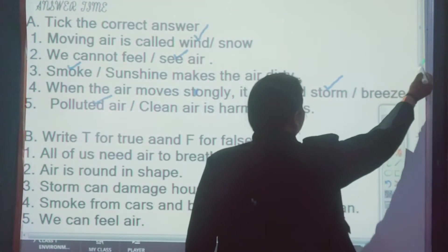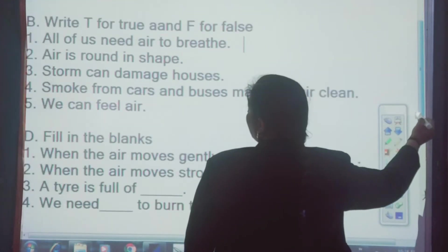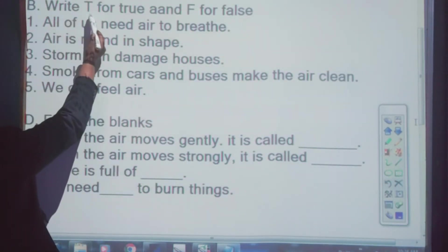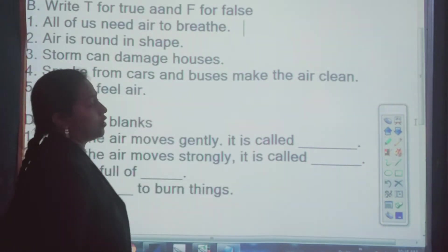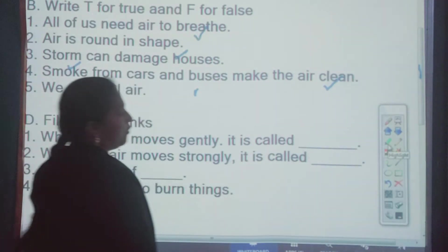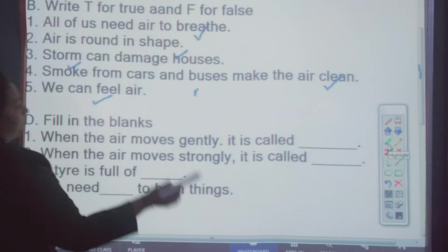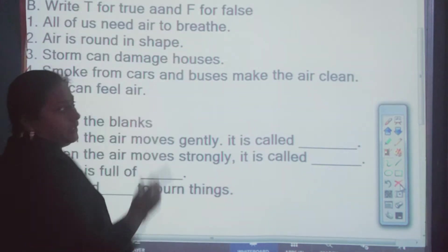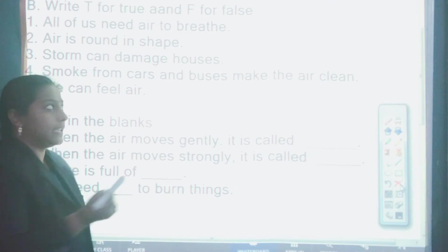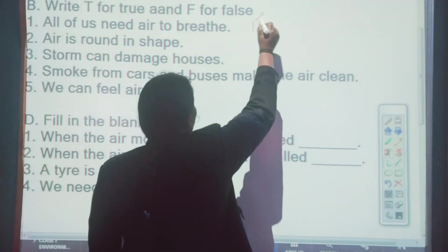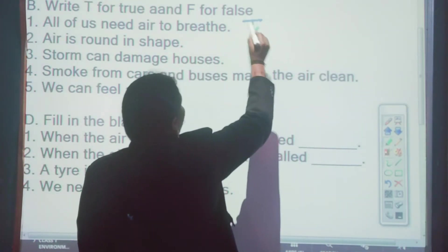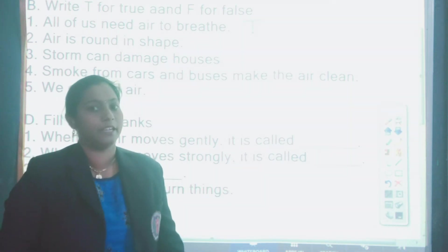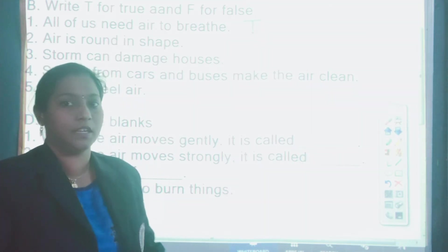Let's quickly move to the next question. That is write true or false. Write T for true and F for false. First one: All of us need air to breathe. All of us need air to breathe. That is true or false? Yes, that is true. We need air to breathe. Without air, we will die. All living beings will die on earth. And earth ka existence hi nahi hoga. Earth bachega hi nahi jagar. Air nahi.